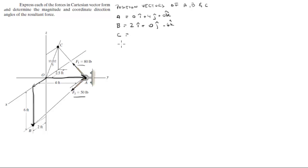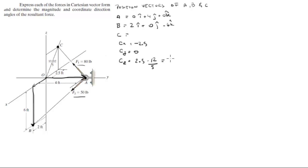Now point C is a bit tricky but not really — it has an x component, a y component, and a z component. The x is negative 2.5. The y is actually 0. To find the z component, all you have to do is multiply 2.5 by 12 and divide by 5 — it's some sort of ratio — so you get 6, going in the positive z direction. So C is -2.5i + 0j + 6k.